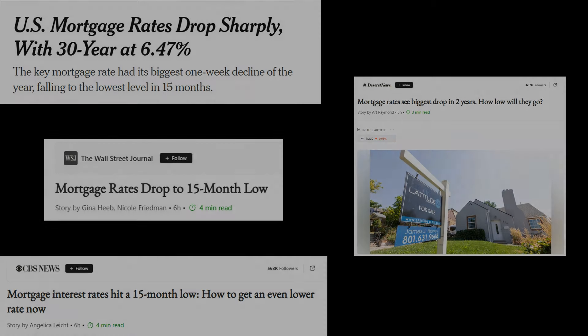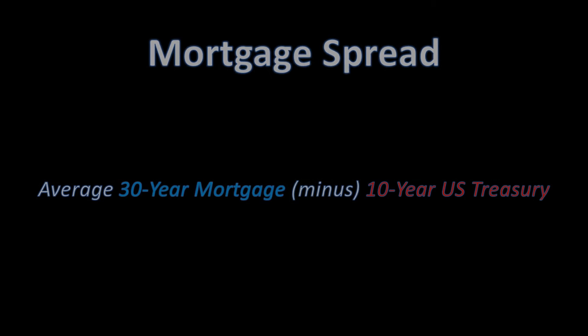What is a mortgage spread? It represents the premium between the bond market, the treasury market, and the extra that's put on top when we buy a house and take on a mortgage. It's actually the 30-year mortgage minus the 10-year U.S. Treasury.